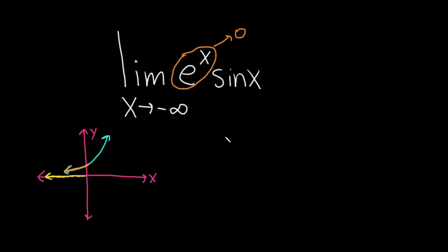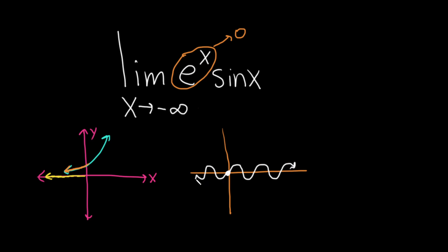On the other hand, the graph of the sine function looks a little bit different. Sine of zero is zero and it just oscillates like this forever — it keeps going on and on forever. It has a maximum of one and a minimum of negative one, so the sine function is always between the values one and negative one. Sine is bounded: it's bounded below by negative one and bounded above by one.